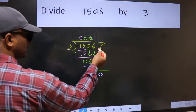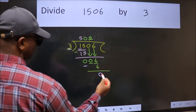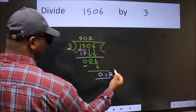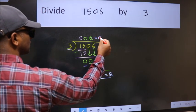No more numbers to bring it down. So we stop here. This is our remainder and this is our quotient.